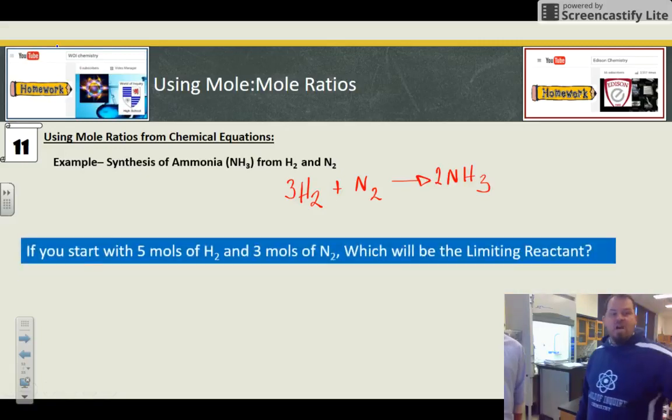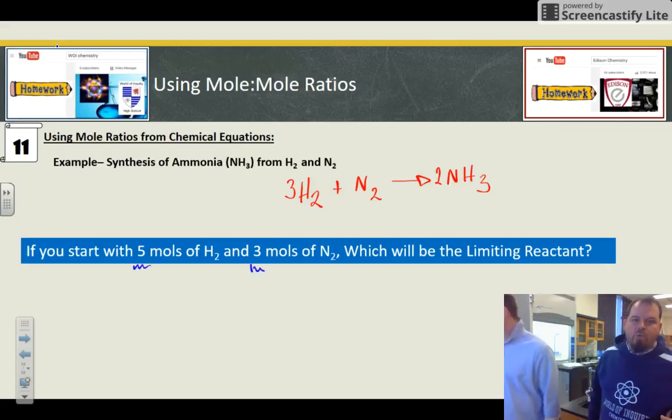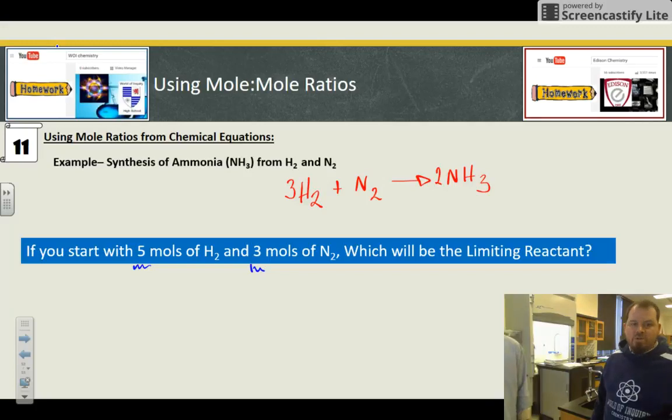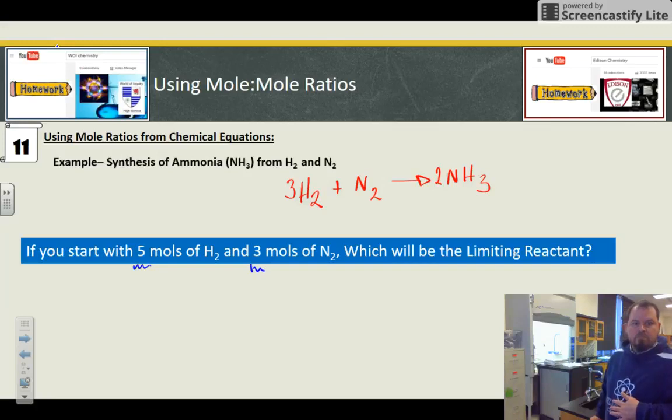But now here's the trick. If I start with five moles of hydrogen and three moles of nitrogen, which one will be the limiting reactant? So what I need to do is start with five moles of hydrogen and run through and then do it again with the moles of nitrogen and run through.